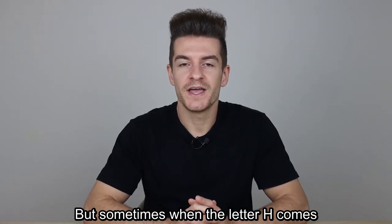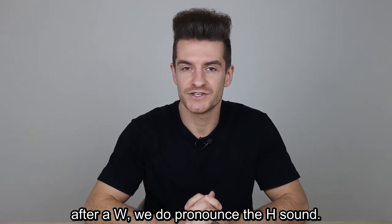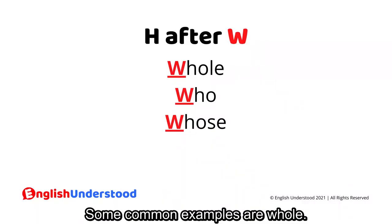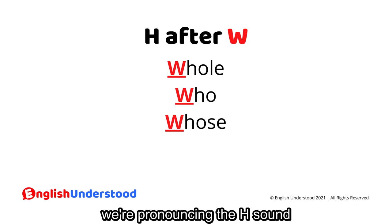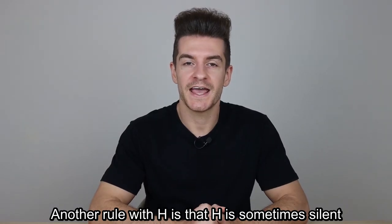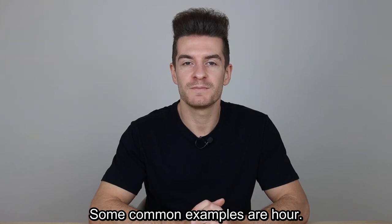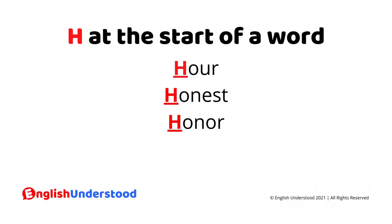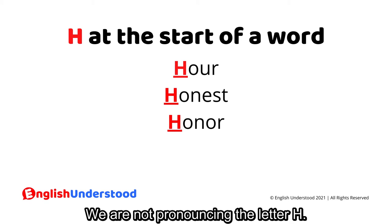But sometimes when the letter H comes after a W, we do pronounce the H sound. Some common examples are: whole, who, whose. In all of these words, we're pronouncing the H sound but we're not pronouncing the W sound. Another rule with H is that H is sometimes silent when it comes at the start of a word. Some common examples are: hour, honest, honour. In all of these words, we are not pronouncing the letter H.